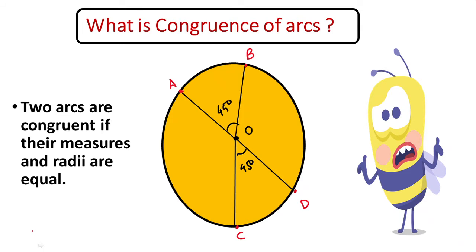After seeing the measure of an arc, let's see what is congruence of arcs. We have already seen the congruence of segments, angles, and triangles — now let's see what is meant by congruence of arcs. Two arcs are congruent if their measures and radii are equal. For the same circle, all radii are the same. So not only must the radii be equal, but the values of the central angles must also be equal. Then you can say arc AB is congruent to arc CD.